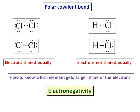How will you know which element gets a larger share? The factor which governs which one will get a larger share is called electronegativity. Be careful — it is not the same as electron affinity. Electronegativity of an element tells whether it is getting a larger or lesser share of the electrons when it forms a covalent bond.